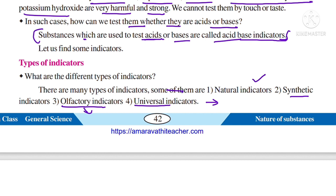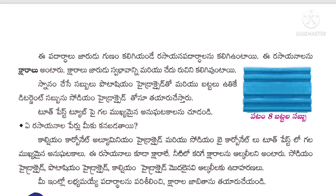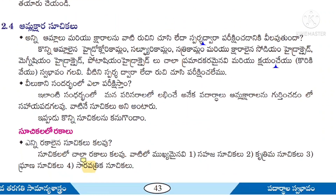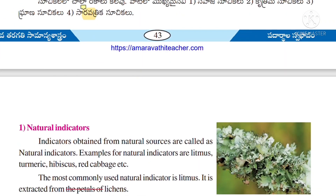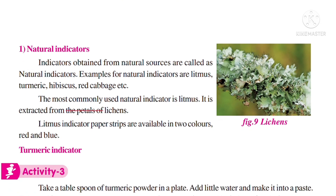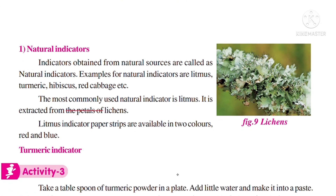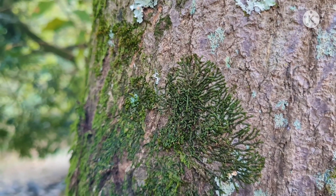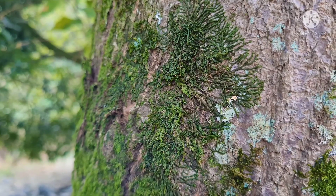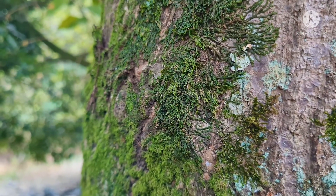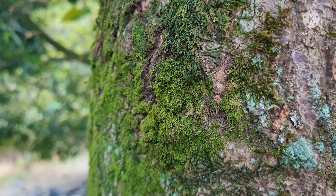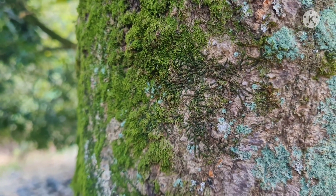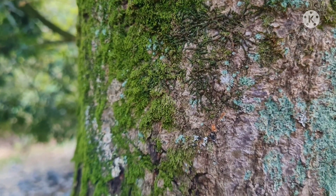Let us learn about each in detail. First, what are natural indicators? Indicators obtained from natural sources are called natural indicators. Examples of natural indicators are litmus, turmeric, hibiscus, and red cabbage. The most commonly used natural indicator is litmus.